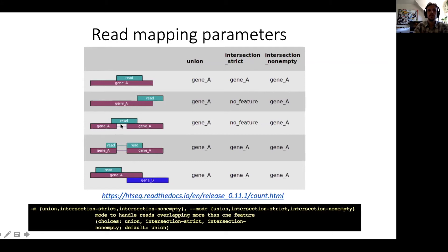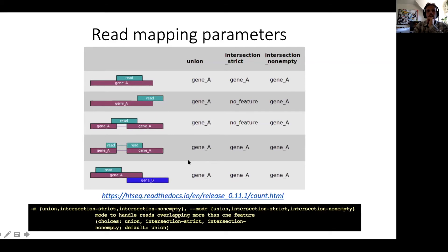Similarly, in another scenario, a portion of the read doesn't overlap with gene A because there's some conflicting region within the read rather than at its edge. This is a different problem, but you will get the same result if you choose the intersection-strict option. There are a couple of other scenarios laid out in the manual as well.